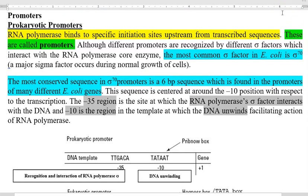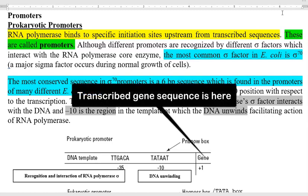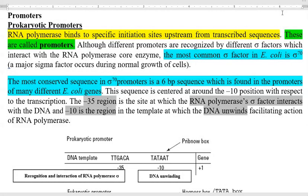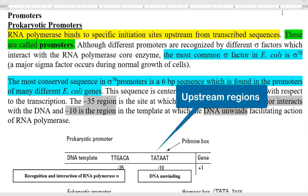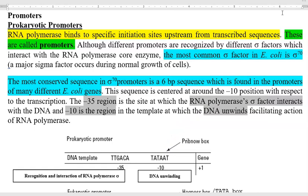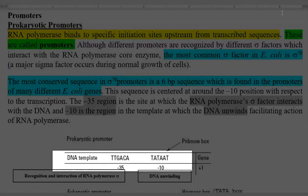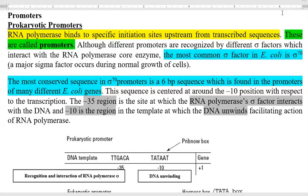In the process of transcription, RNA polymerase binds to specific initiation sites upstream from the transcribed sequences. These regions are referred to as promoters. Upstream regions refer to those regions that are in front of the gene that is going to be transcribed. In the diagram, plus one is the place where the gene is transcribed, and the regions on the left — minus 10 and minus 35 — are referred to as upstream initiation sites where RNA polymerase will be binding.